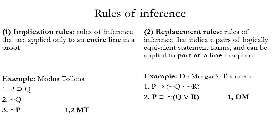There are two main types of rules of inference: implication rules and replacement rules. Implication rules apply to an entire line of a proof only. An example is modus ponens from the previous slide.